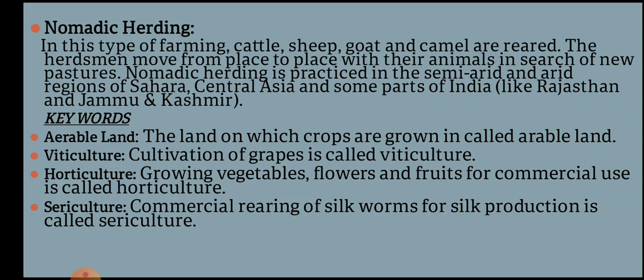There are some keywords related to this chapter. Arable land means the land on which crops are grown. Viticulture is the cultivation of grapes. Horticulture is the growing of vegetables, flowers, and fruits for commercial use. Sericulture is the commercial rearing of silkworms for silk production. In the next lesson, we will discuss commercial farming.